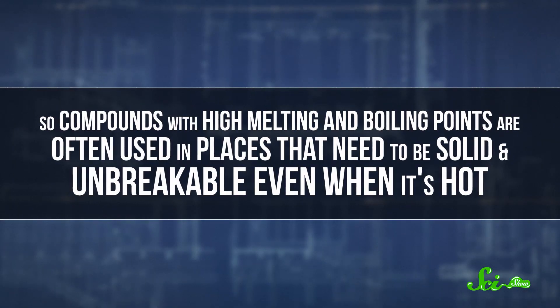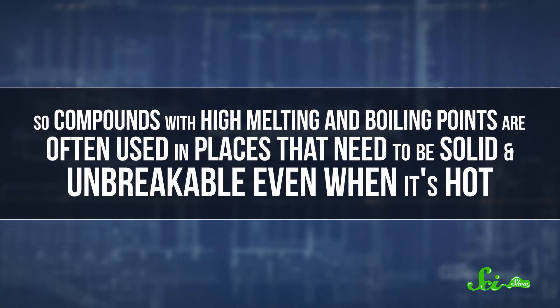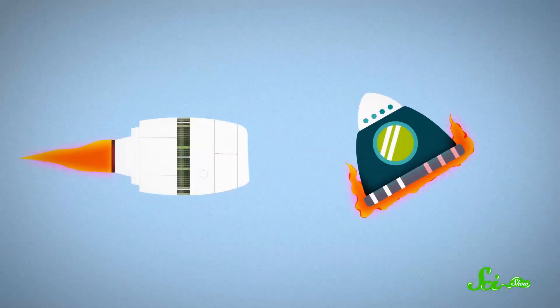Not only do these compounds tend to stay solid at super-high temperatures, they're also very hard to break. So compounds with very high melting and boiling points are often used in places that need to be solid and unbreakable even when it's hot, like inside of engines or as heat shields for spacecraft. These kinds of compounds with really high melting points were just right for the job. And unlike helium's record, compounds with higher melting or boiling points might still be waiting to be discovered. We just need to keep looking. And burning stuff. Just making it real hot!